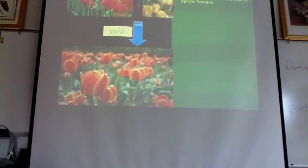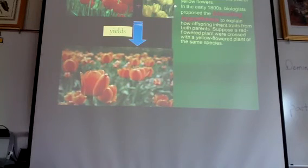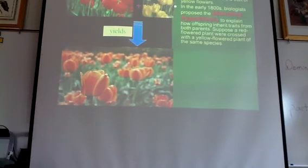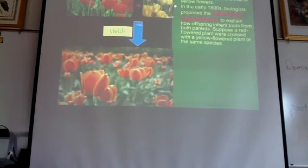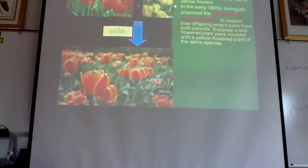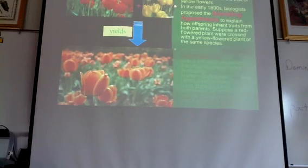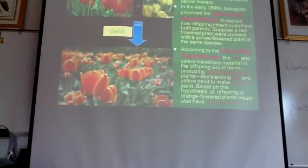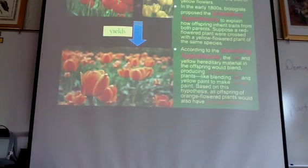One of the first hypotheses to explain how traits are passed on was called the blending hypothesis. Pictorially, this is what it stated: if one parent was red and the other was yellow, crossing those parents and planting their seeds would produce all orange offspring, because red blended with yellow gives you orange. Tall mom, short dad — medium kid. That's the blending hypothesis: the traits of parents blend together to form the traits of the offspring.